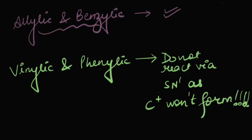So, what did we learn in this video? Allylic and benzylic substrates are very happy to undergo substitution via SN1 mechanism, while the vinylic and phenylic ones are not. The carbocation in those cases would not form at all, as they would be highly, highly unstable. In the next video, we'll be talking about how and why rearrangements of carbocations take place in an SN1 mechanism.